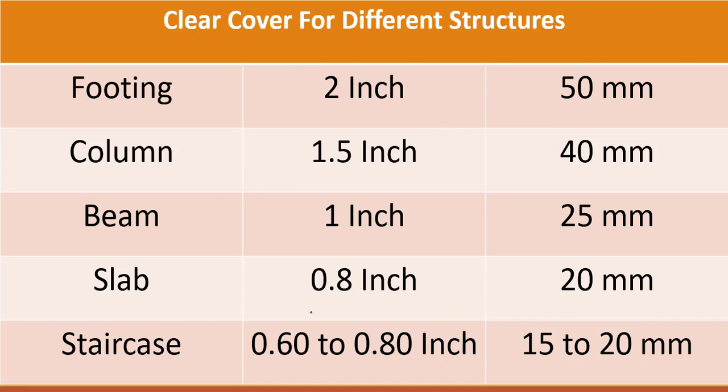For footing, it is 2 inches, which means 50 millimeters. I'm talking about clear cover here—clear cover for different structures. For column, you can take 1.5 inches as clear cover, which means 40 millimeters.